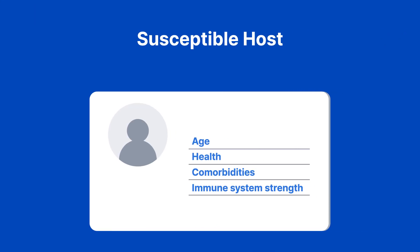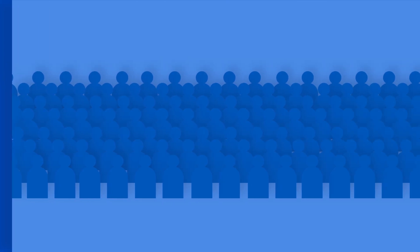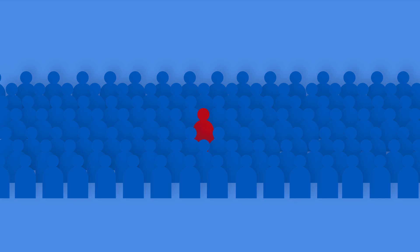The sixth and final link in the chain of infection is the susceptible host — someone at risk of infection. Factors that affect susceptibility include age, health, comorbidities, and immune system strength. People with low immune systems are called immunocompromised. So far we've used the chain of infection to discuss how one individual can infect another, but as evidenced by the COVID-19 pandemic, diseases can spread through large populations extremely quickly.